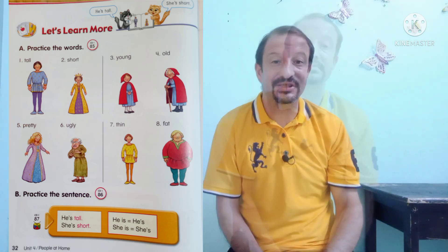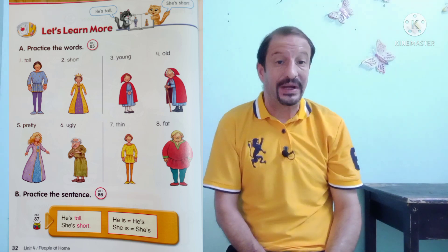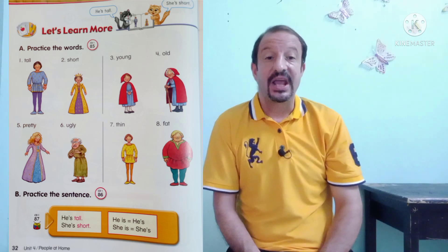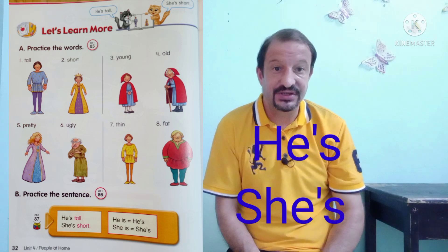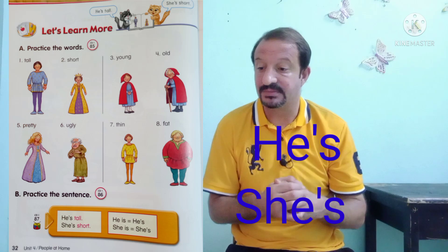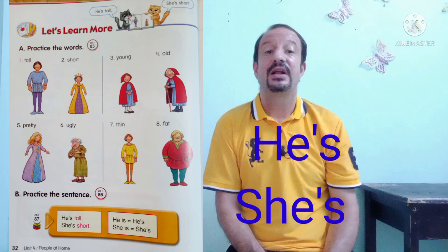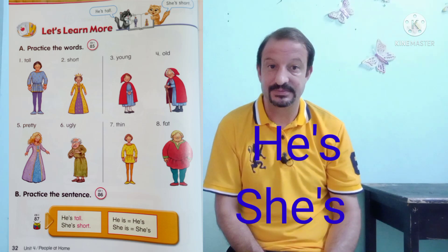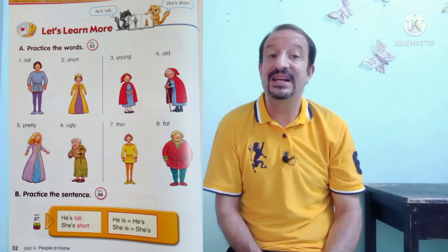Okay, very good students. Now we're going to make sentences with the words he's and she's. He's — used with a male subject. She's — used with a female subject. Okay, so now just listen.